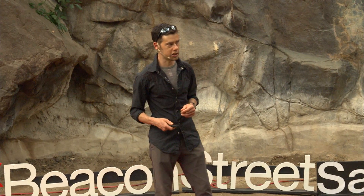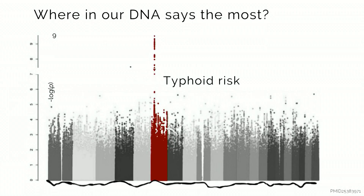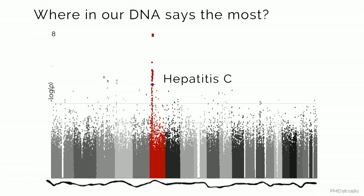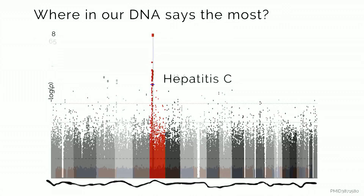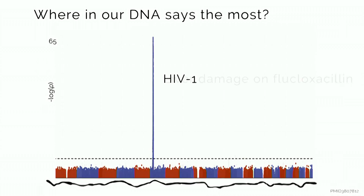There's one part of our genomes that I want to show you, and I'm going to see if you can spot it. I'm going to show you a bunch of charts that scientists use to scan across our genomes and ask: where does it matter what spelling somebody carries for a disease? For typhoid fever, for example, there's a peak on the sixth chromosome. Looking at the sixth band in every one of these slides, you'll see a really strong peak for various diseases — infections like who gets typhus, who gets HIV-1, who gets hepatitis C, who gets liver damage from a particular drug.